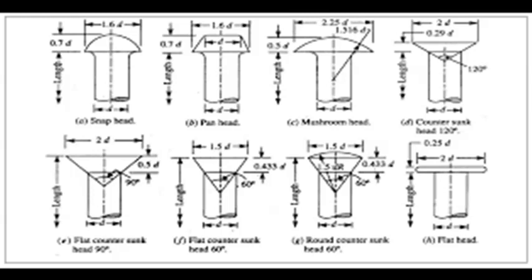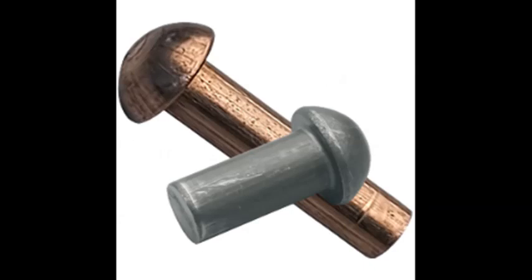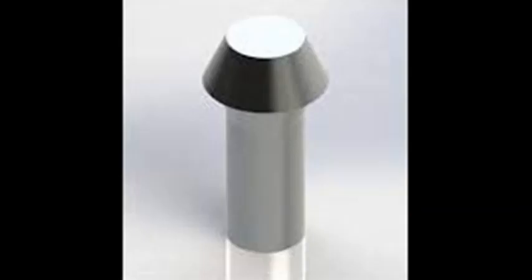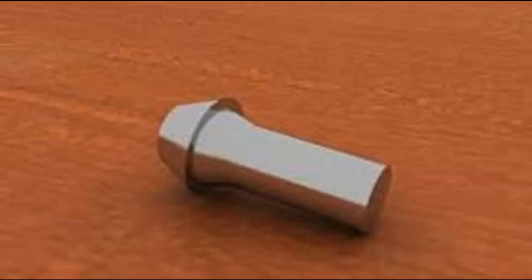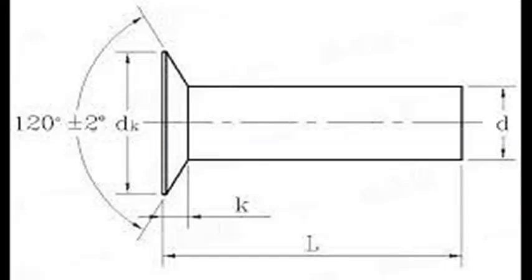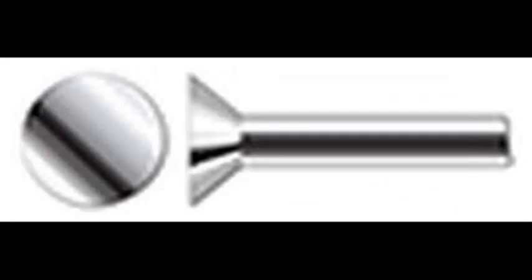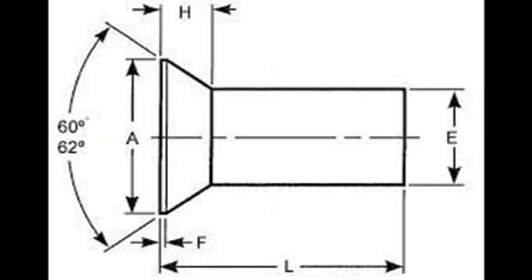In this classification we can see different types of rivets like snap head rivets, pan head rivets, pan head with tapered neck, countersunk head with 120 degrees, flat countersunk head 90 degrees, and flat countersunk head 60 degrees.